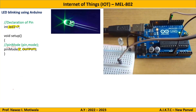Now step three involves the logical sequence of the program, which goes on repeating again and again, and that comes under void loop. So I will write void loop with an opening bracket. For LED blinking, what sequence do we need?